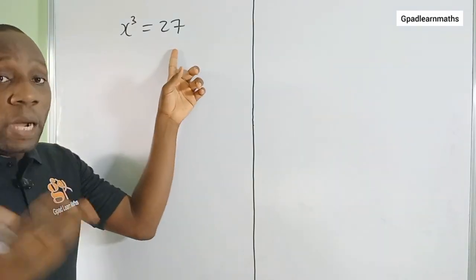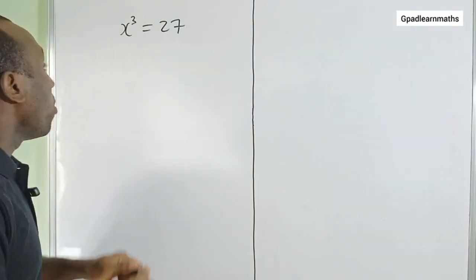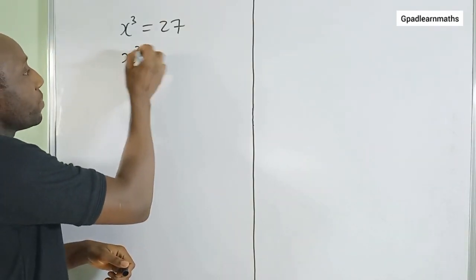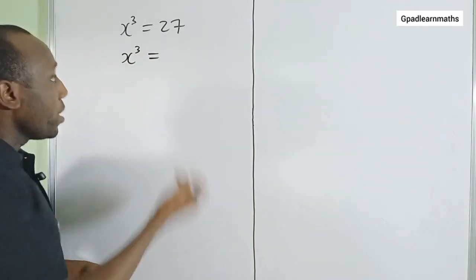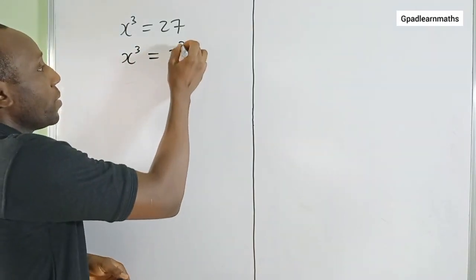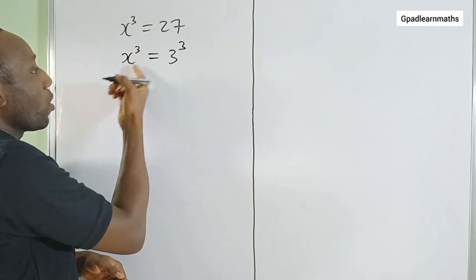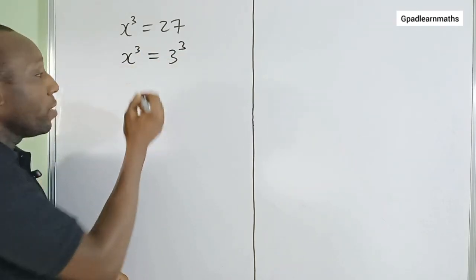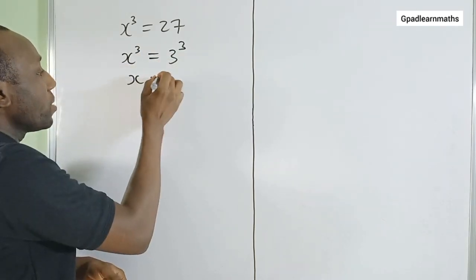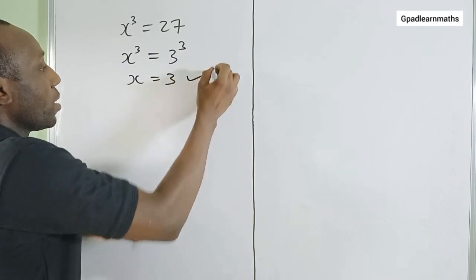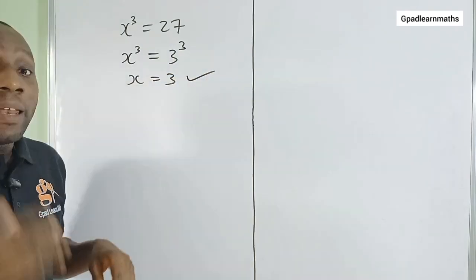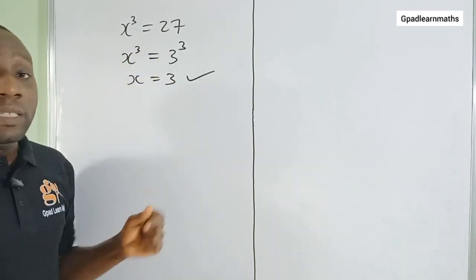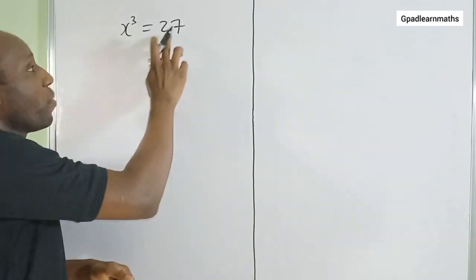If you were to solve this question, how would you do it? Would you simply say 27 is 3 raised to the power 3, and because the powers are the same, equate the bases — and would this just be your answer? Let's find out all the roots that satisfy this equation.